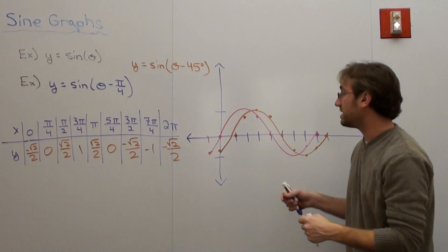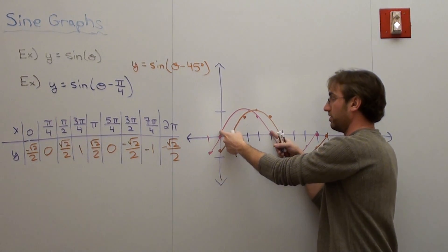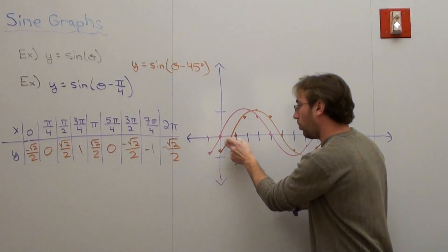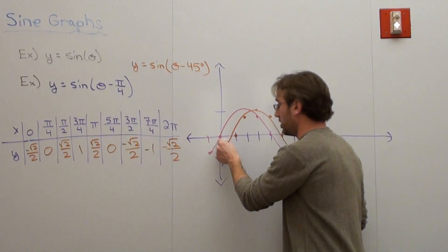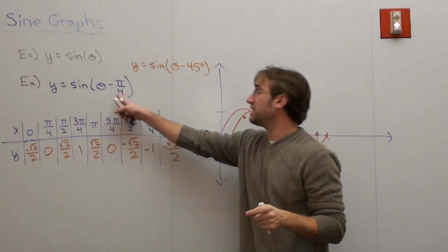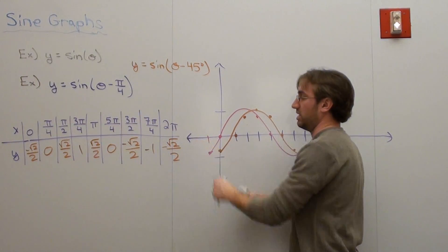So, it looks like that. Basically, what I did was I took this red graph and I moved it over. I shifted it one spot. I shifted it pi over 4. If it's negative pi over 4, I shifted one spot to the right. If it's positive pi over 4, I actually shifted one spot to the left.